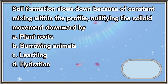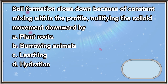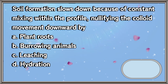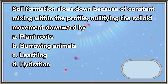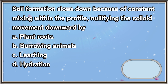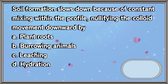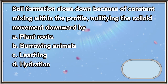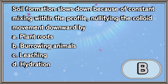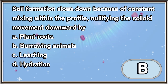Soil formation slows down because of constant mixing within the profile, nullifying the colloid movement downward by: A. Plant roots. B. Burrowing animals. C. Leaching. D. Hydration. The answer is letter B.